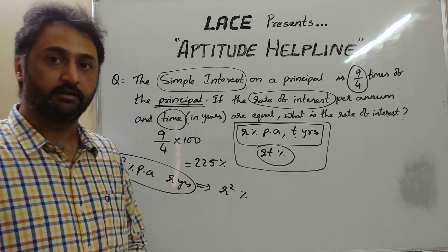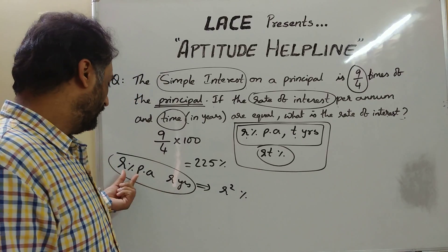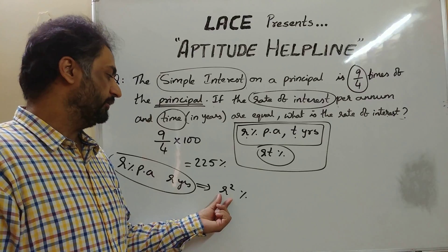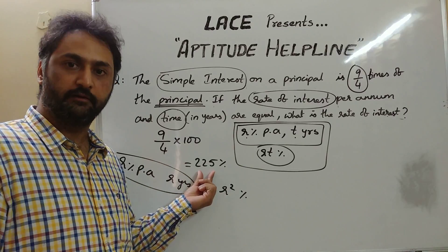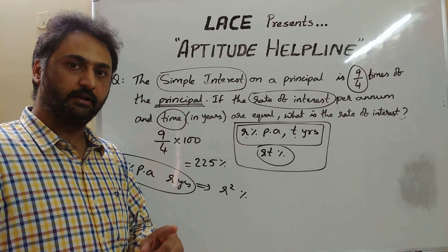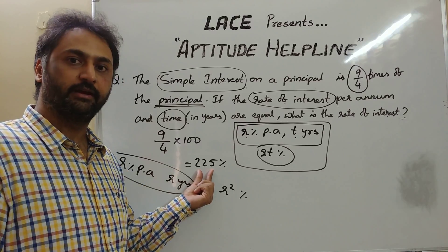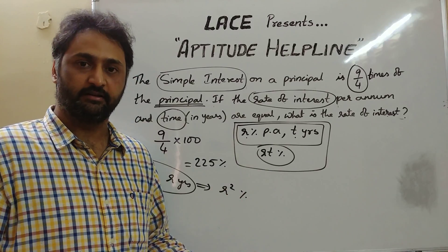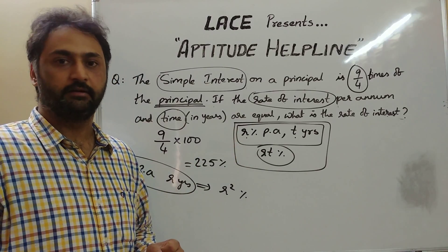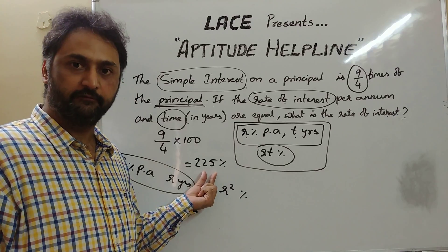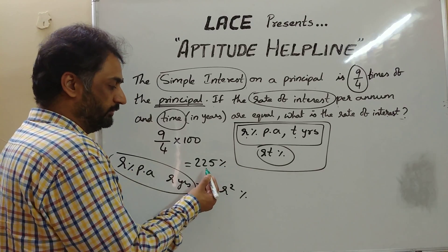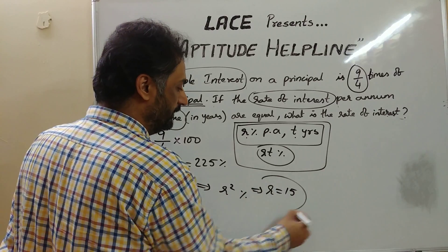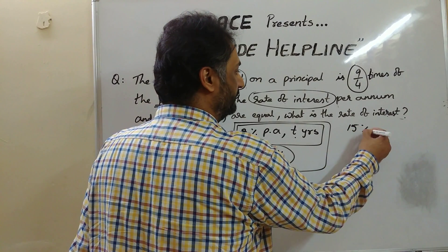The examiner is testing whether you identify that R × T% gives R²%, and whether you recognize 9/4 as 225%. He is simply asking: which number squared equals 225? Since 225 is 15², if R² = 225, then R = 15. So the answer is 15% per annum.